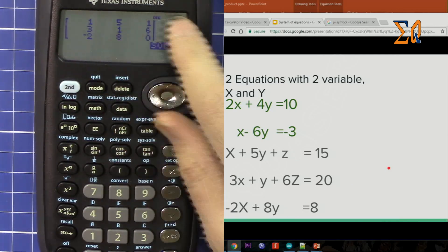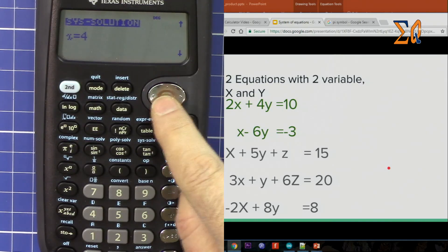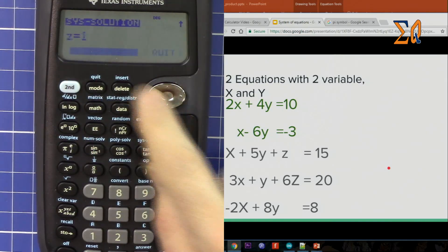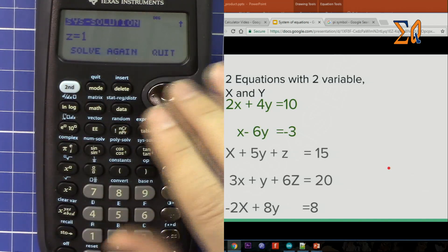Press equal sign. x is 4. This arrow shows that we can go down. y is 2, and then z is 1. So we can either solve again if you want to try another equation or simply quit.